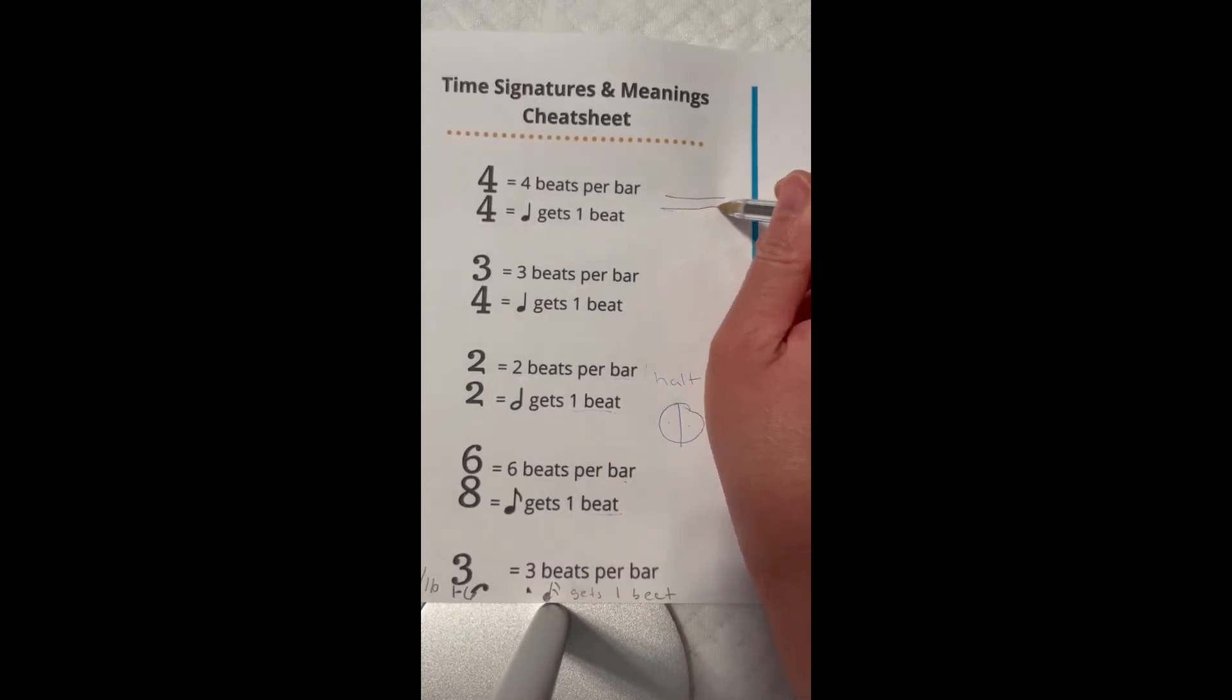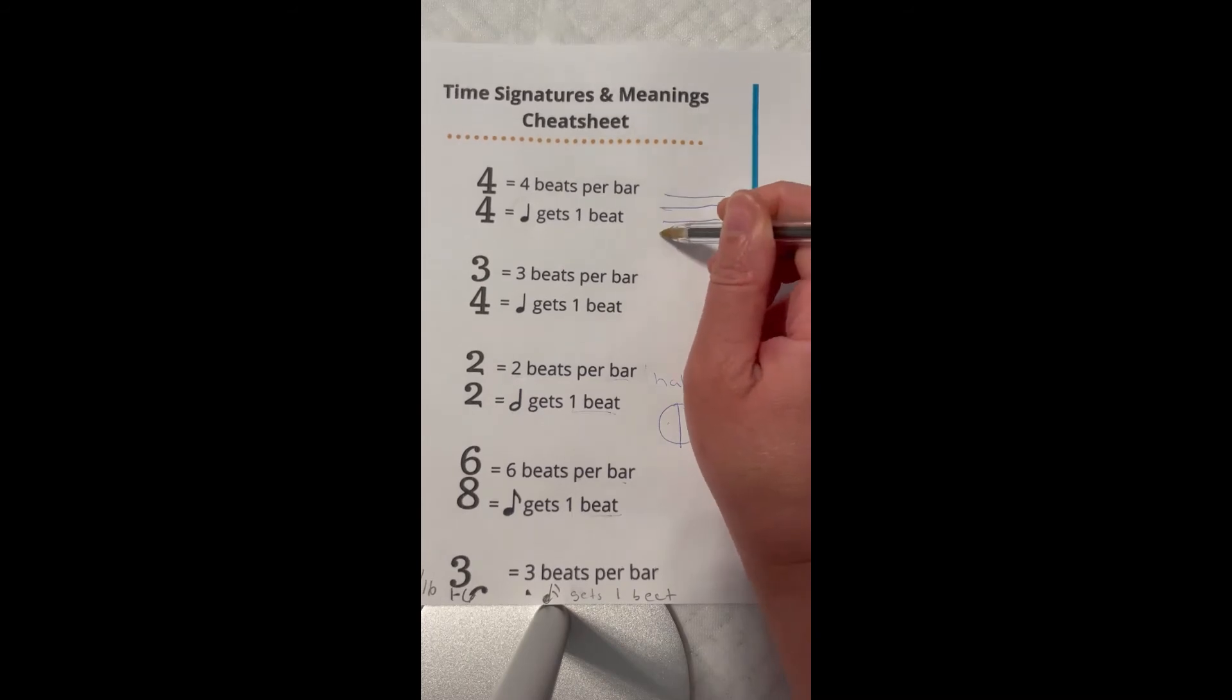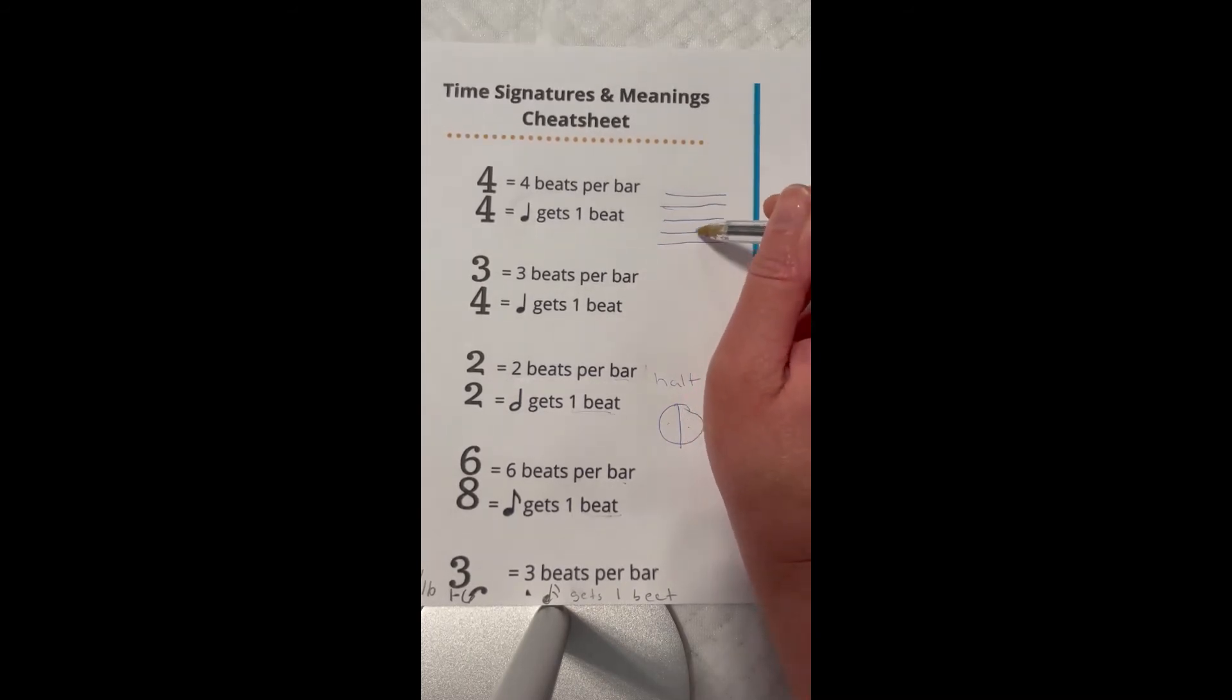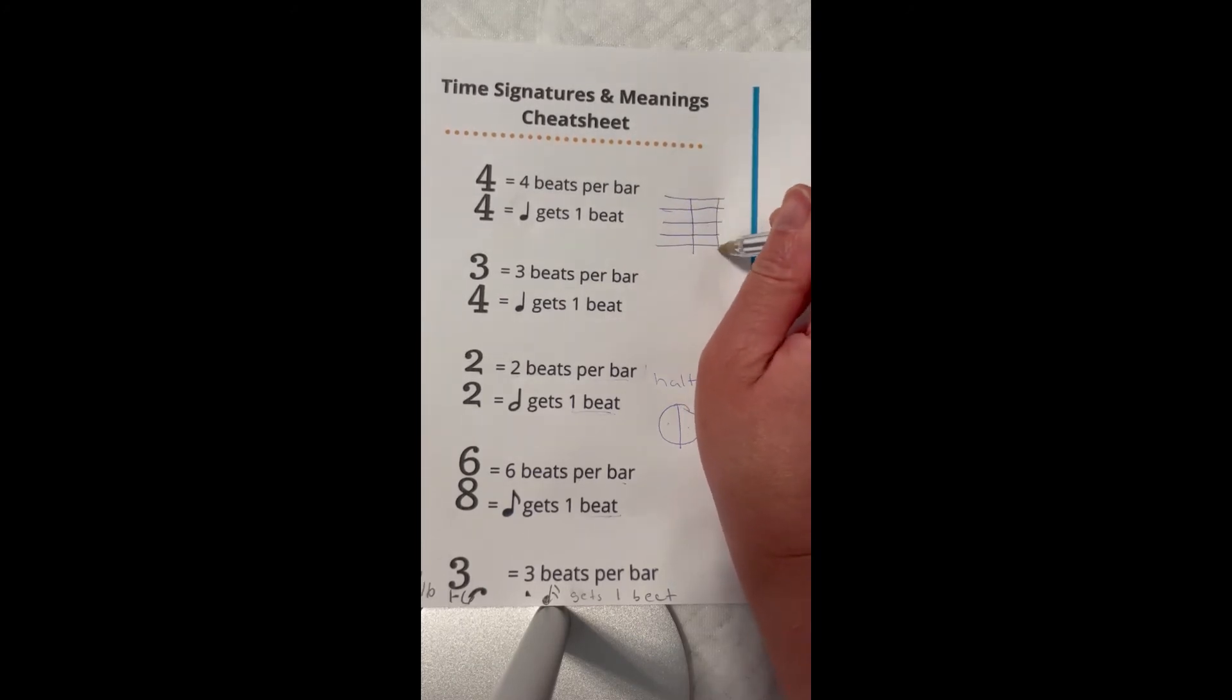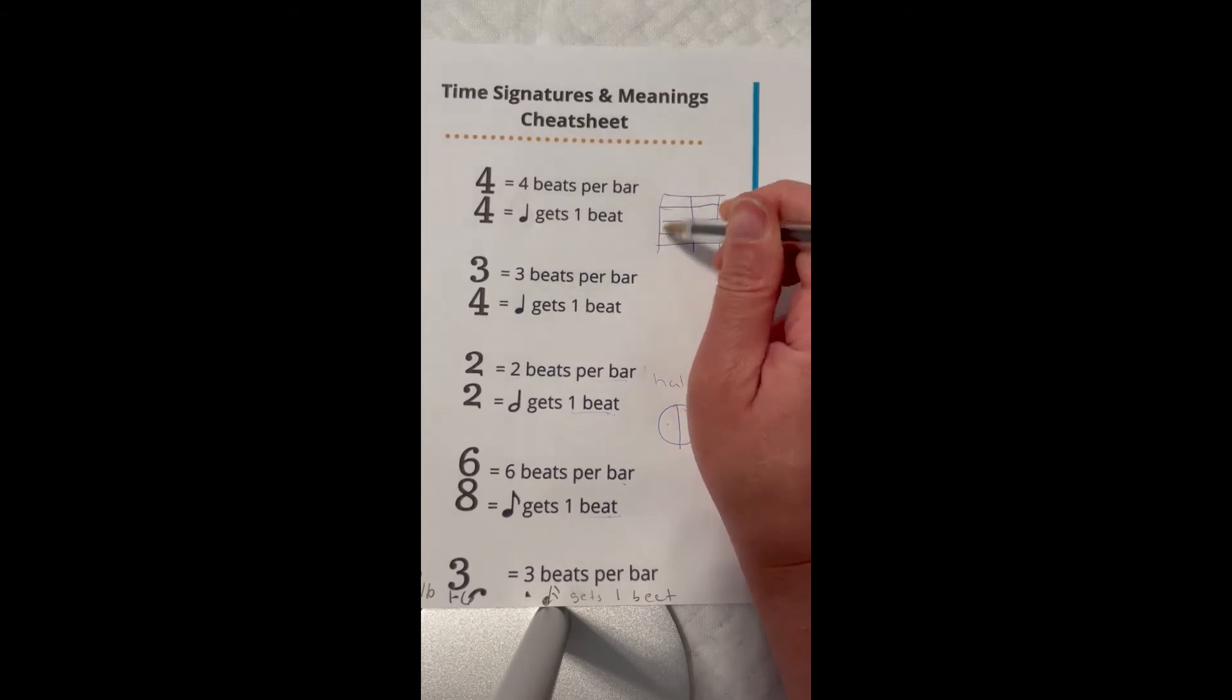When you read the lines, you have four lines, five lines, four spaces. When they say a bar, they mean this - this bar. So you have notes here, notes here, and a bar here. Here's your bar - it separates the notes from your space.